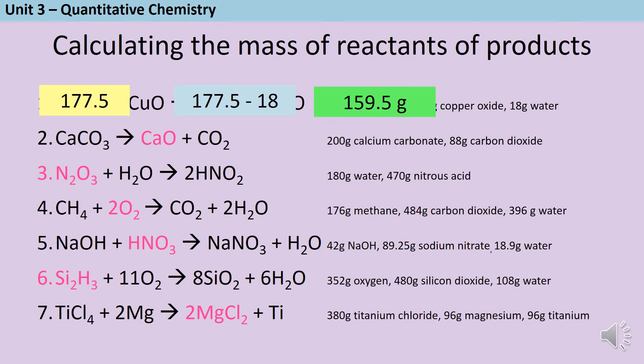For question two, we've got 200 grams of calcium carbonate and the mass on the right hand side must be the same. So 200 take away the mass of the carbon dioxide gives us a total of 112 grams for the calcium oxide.